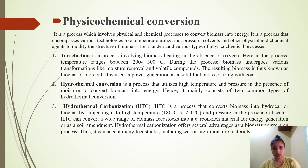Lastly, physiochemical conversion — a process which involves physical and chemical processes to convert biomass into energy, encompassing technologies that use temperature, pressure, solvents, and other physical and chemical agents to modify the structure of biomass. Torrefaction is the process involving biomass heating in the absence of oxygen, with process temperatures ranging between 200 to 300 degrees Celsius. During the process, biomass undergoes transformations like moisture removal and loss of volatile compounds. The resulting biomass is known as biochar or biocoal, used in power generation as a solid fuel or co-fired with coal.